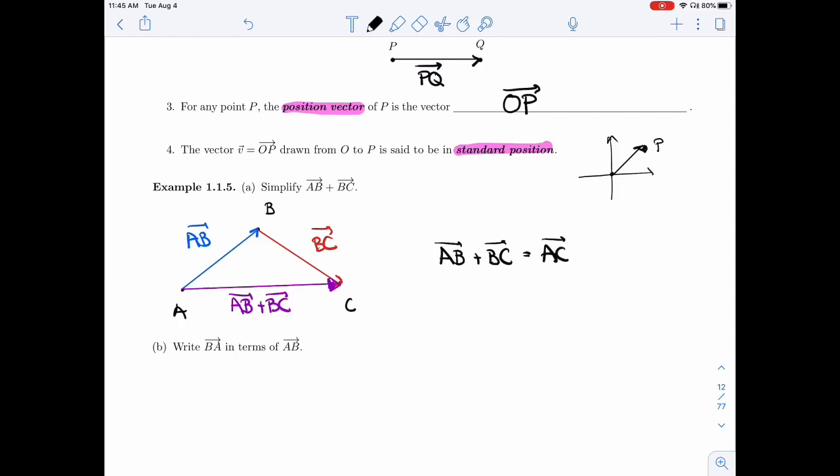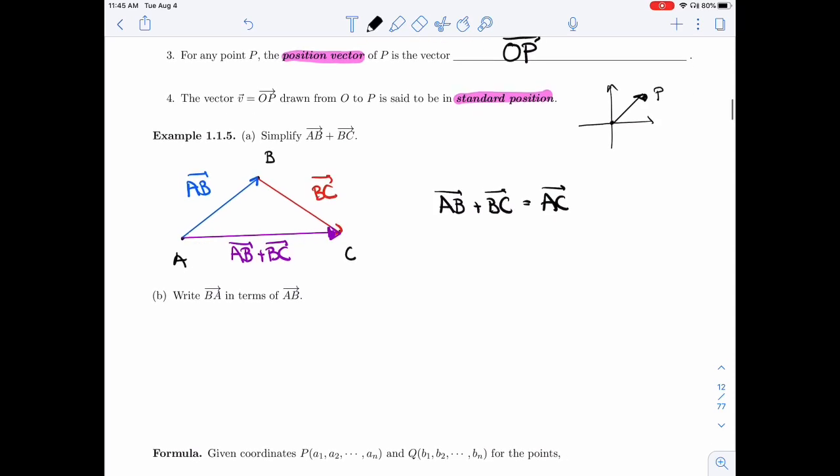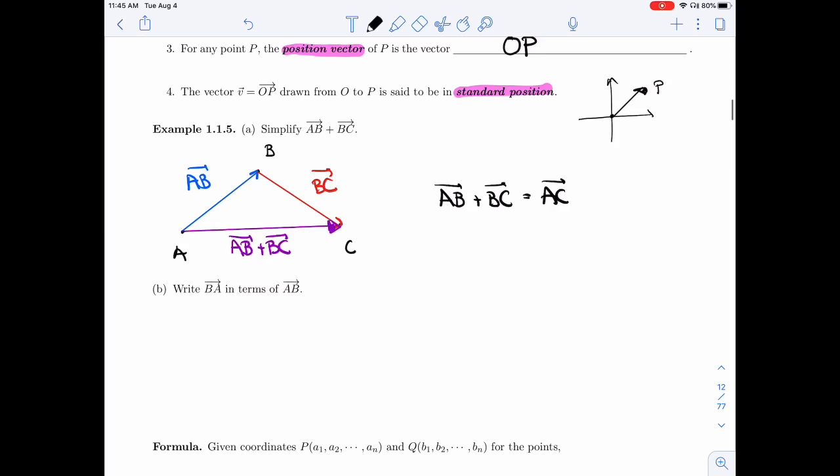And this makes sense if you think about displacement. If I go from A to B and then from B to C, the total displacement is the same as going from A to C directly. The change in position is the same.